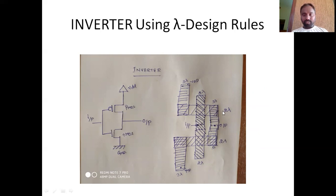Now this is an inverter I have drawn using lambda-based design rules. This is PMOS and this is NMOS. For PMOS, I have drawn p-diffusion of width 2 lambda, polysilicon of 2 lambda, and metal of width 3 lambda.